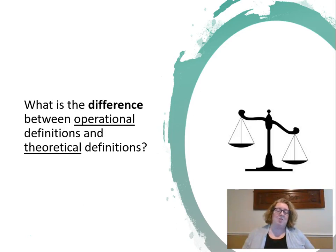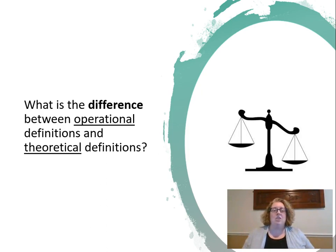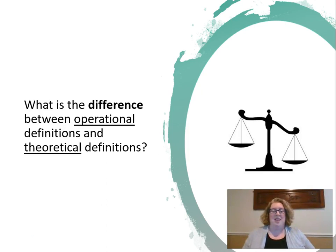We can talk about operational and theoretical definitions, and both are really important when I'm talking about what I'm measuring. My theoretical definition is how I define that construct theoretically. So if I say self-concept is defined as the way in which I perceive my abilities, that's a theoretical definition. Achievement in math is defined by my ability to add and subtract two-digit numbers. My operational definition is how I make that happen — what does my test look like? I've operationalized achievement in mathematics by having a series of two-digit addition and subtraction problems, or I've operationalized self-concept by having a series of questions about self-concept. So operational is what I'm actually doing to measure it.